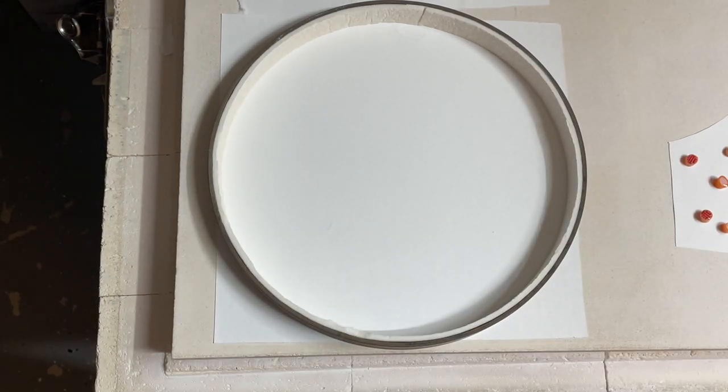We're going to do a full fuse and fire it and see what it comes out looking like, and then I'll decide how to slump it from there. So I'm going to get started chopping up some clear scrap and then laying in my vitrograph on top of that.